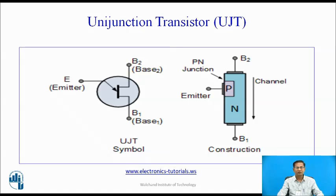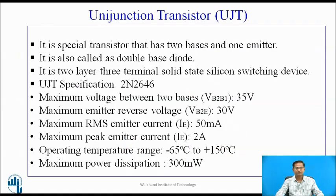This is the UJT symbol and this is the constructional diagram of UJT. It is a special transistor that has two bases and one emitter. It is also called a double base diode. It is a two-layer, three-terminal solid-state silicon switching device.